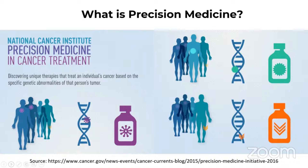It is in contrast to a one-size-fits-all approach in which disease treatment and prevention strategies are developed for the average person with less consideration for the differences between individuals. After decades of research, we are poised to enter a new era of medical practice where detailed genetic and other molecular information about a patient's cancer is routinely used to deploy effective patient-specific remedies to treat it. We are about to enter the era of precision medicine where biology is now seen as a field of data science.